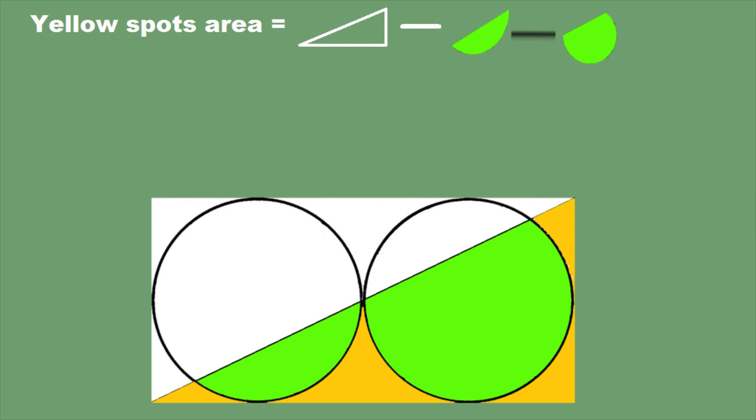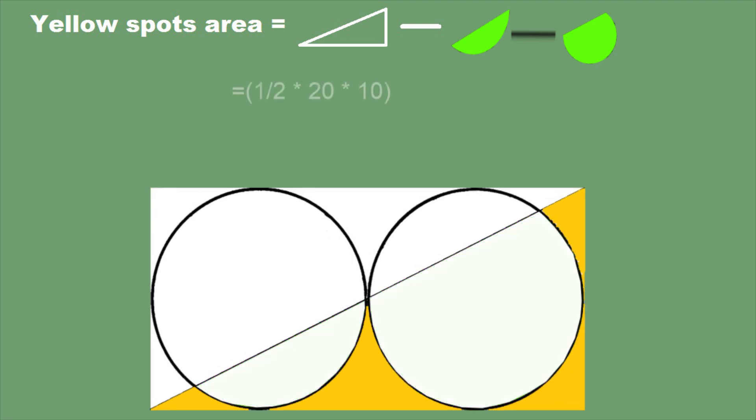Now, the total area of this right angle triangle is half times 20 times 10. Look at this symmetry. If we join these two pieces together, they make a full circle.